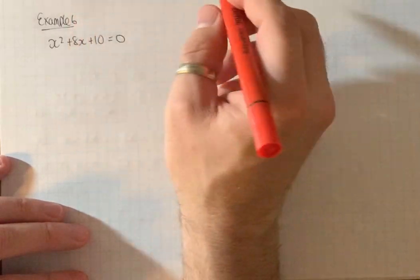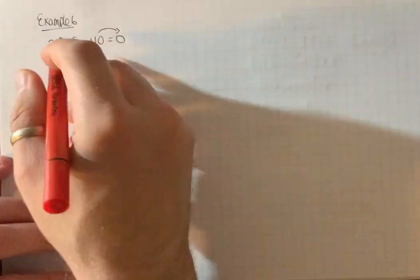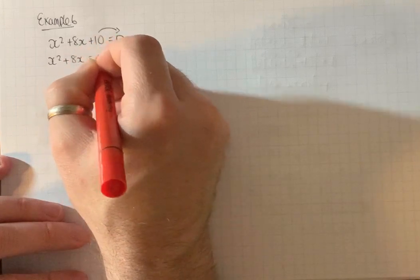First thing I'm going to do, because when completing the square it's easy just to deal with the x terms, I'm going to smack that over to the right hand side and make it x squared plus 8x equals minus 10.